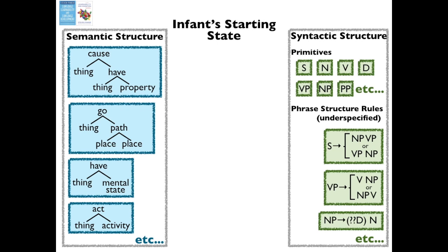For instance, in this first one in the top left, you have something causing some other thing to have a property — such as bleach causing laundry to be white, or the moon causing the earth to have tides. Even with innate syntactic and semantic structure, it's not clear how to learn which of the infinite possible mappings between them is the right one. So how do we map the semantic structures onto the syntactic structures?